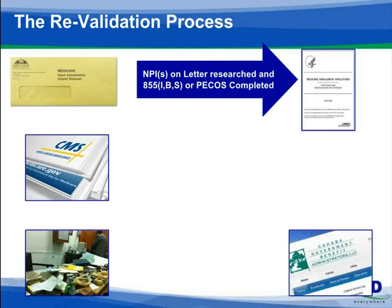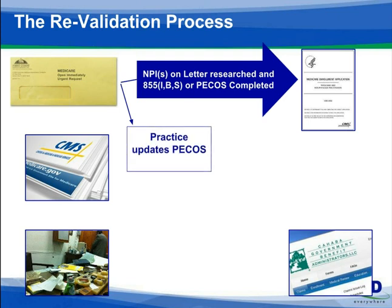There is no fee for revalidating unless you're a supplier or an institutional provider. Direct revalidation using the PECOS database is fast and preferred. You'll need your NPI username and password to log on to PECOS. If you can't remember it, call NPPES and have the password reset. You will need to revalidate all PTANs in PECOS. Upon receipt of the revalidation request, you have 60 days from the date of the letter to revalidate. A 60-day extension may be available if more time is needed. Extension requests should be coordinated with your intermediary and may be requested in writing, fax, email, or via phone.